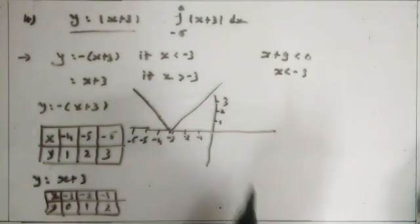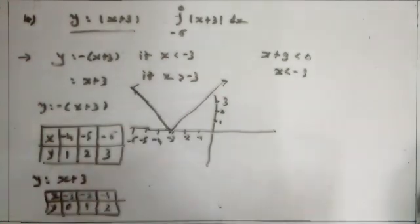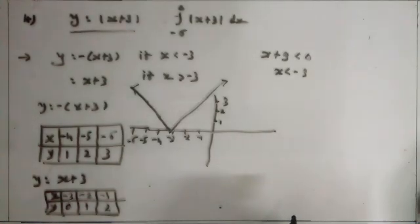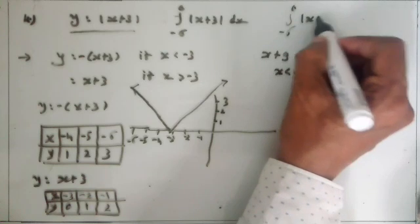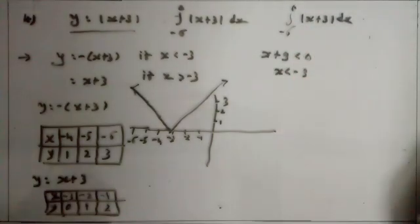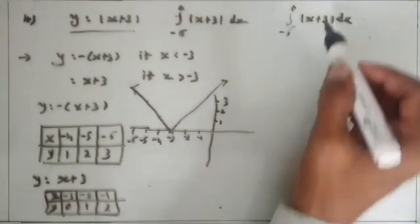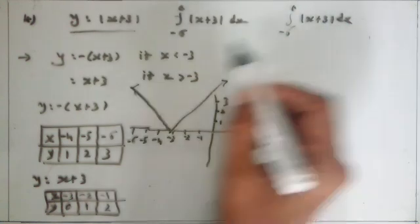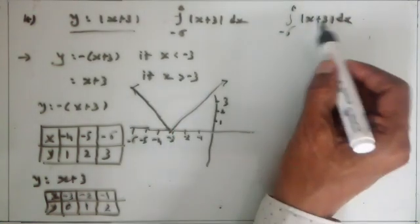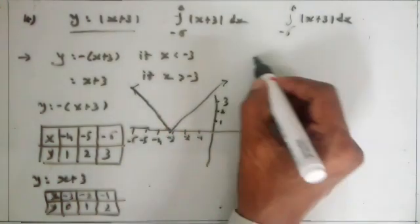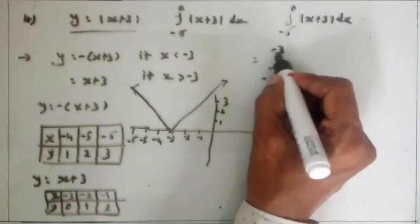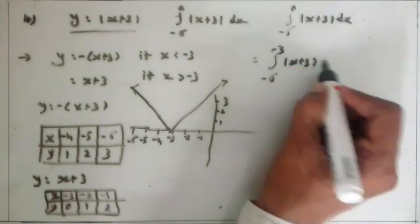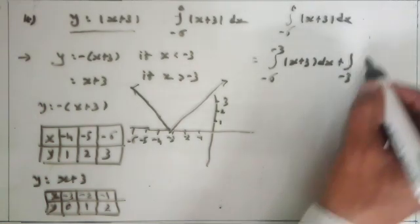This is the graph of y is equal to mod of (x plus 3). Now here we calculate the integral from minus 6 to 0 of mod of (x plus 3) dx. Remember: mod of (x plus 3) becomes negative if x is less than minus 3, and becomes positive if x is greater than minus 3. So this definite integration is divided into two parts: minus 6 to minus 3, and minus 3 to 0.